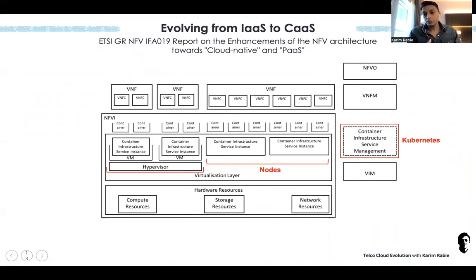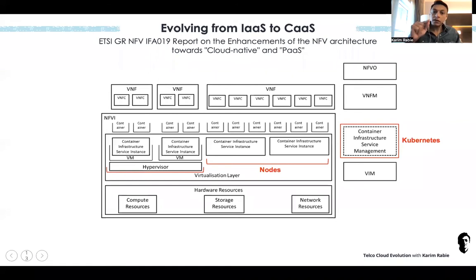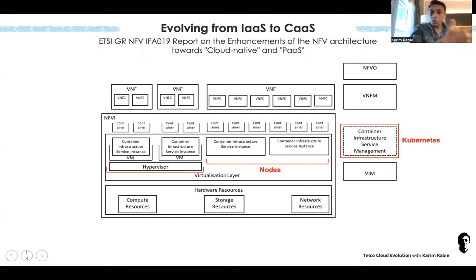The first step from ETSI NFV that we saw publicly happened in 2019 — they published GR NFV IFA-019: 'Report on the Enhancements of the NFV Architecture towards Cloud Native and PaaS.' That was a late move, because most operators had already drawn an architecture and adopted a solution to welcome and onboard pilots for 5G. And a report in 2019 is not a specification — it's not something you can rely on.